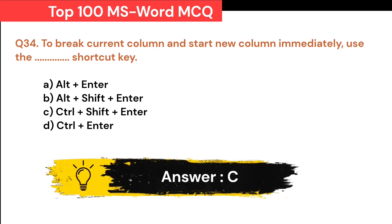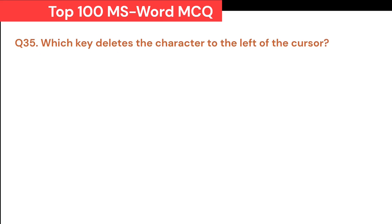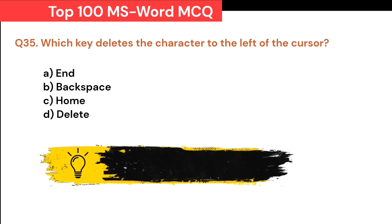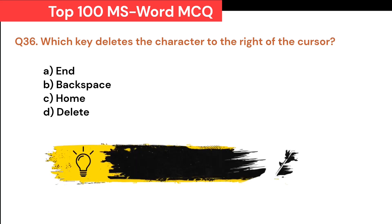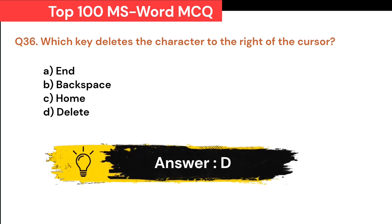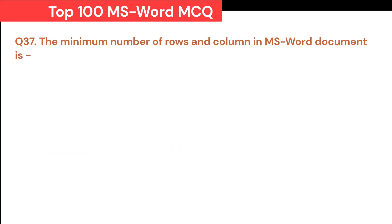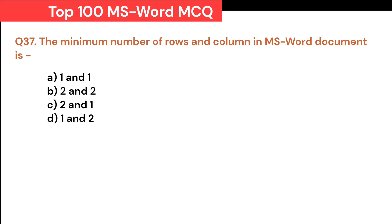Which key deletes the character to the left of the cursor? A. A. B. Backspace. C. Home. D. Delete. Correct answer is B. Backspace. Which key deletes the character to the right of the cursor? A. A. B. Backspace. C. Home. D. Delete. Correct answer is D. Delete. The minimum number of rows and columns in an MS Word document is: